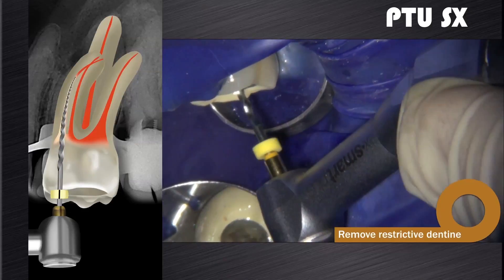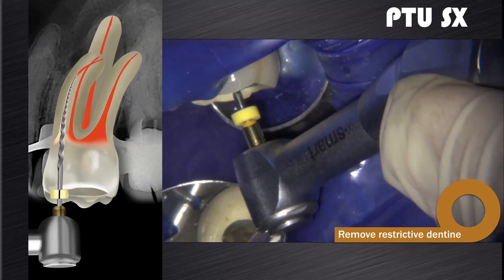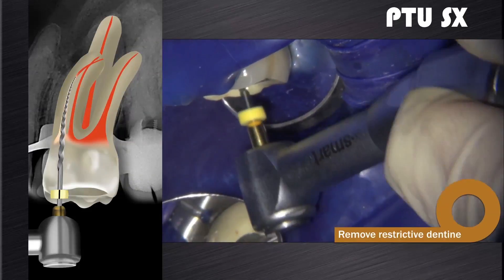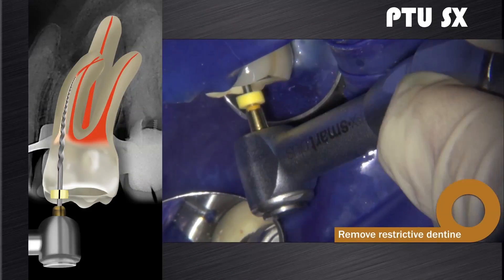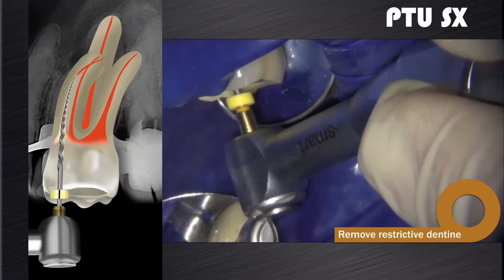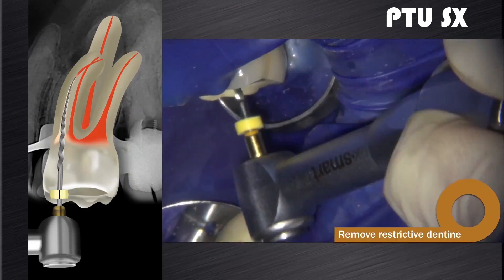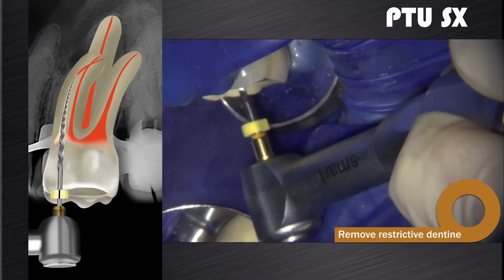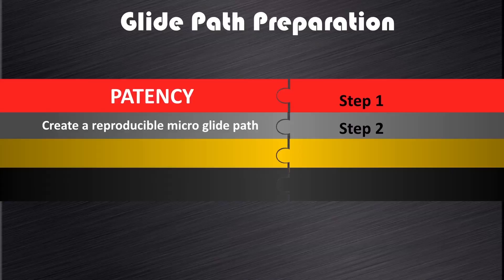This instrument should be used in a backstroke brushing motion and never pushed down into the root canal system. The severe taper of 9 to 11 percent of this instrument can cause taper lock and fracture if it is used continuously with the wrong motion.